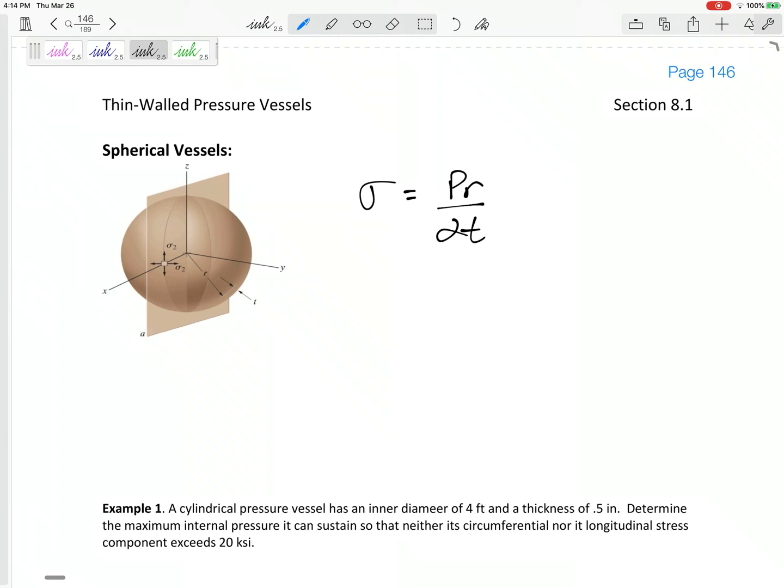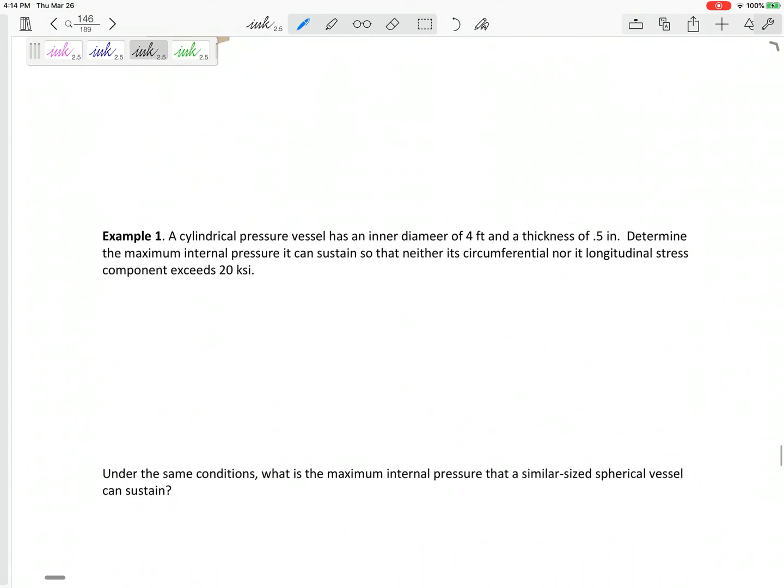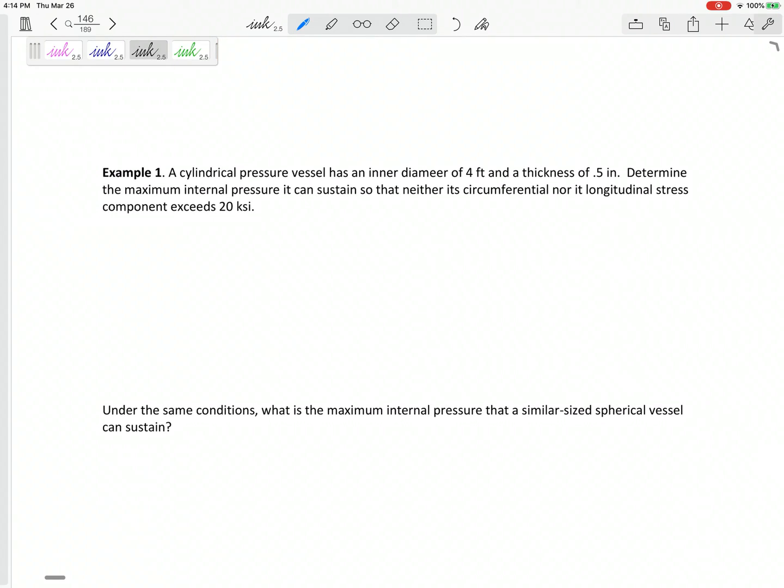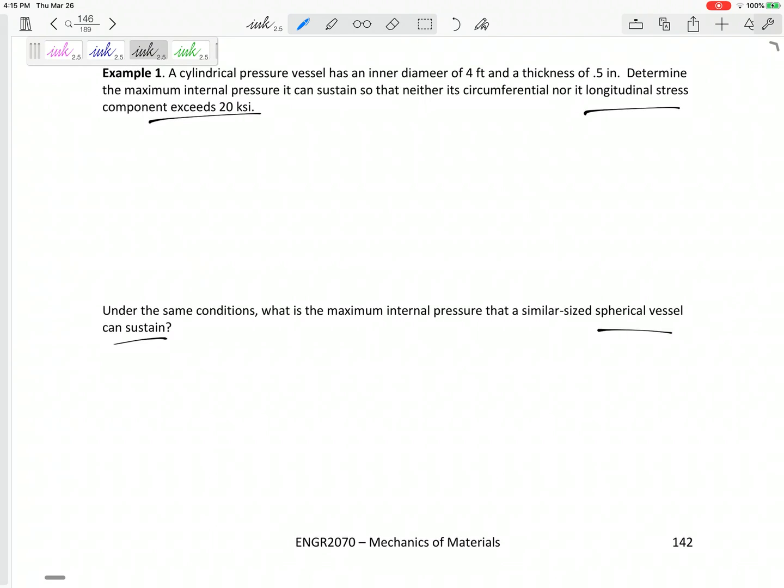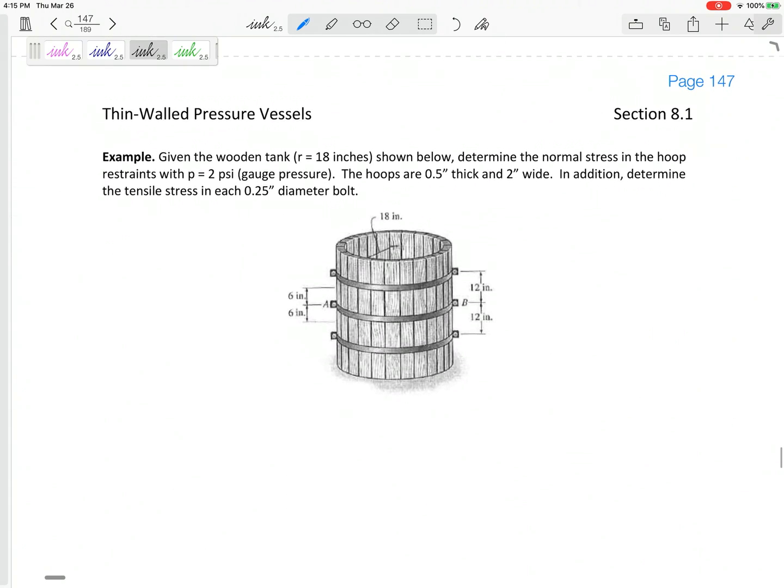But I don't normally teach this even though I probably should make some videos. We probably do have time, I don't have the energy to go back and teach this. But you look at the types of problems we're looking at: determine the pressure if it can't have a longitudinal stress that exceeds 20 ksi, compare spherical versus cylindrical pressure vessels. We could look at this and kind of look at what type of joints do we need here so that it can withstand this gauge pressure of 2 psi.